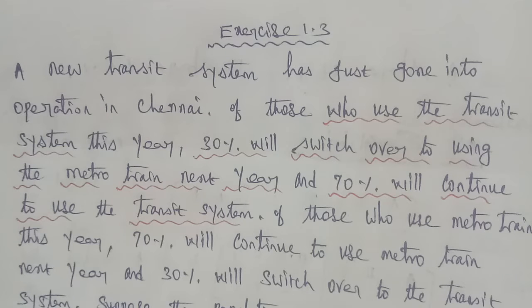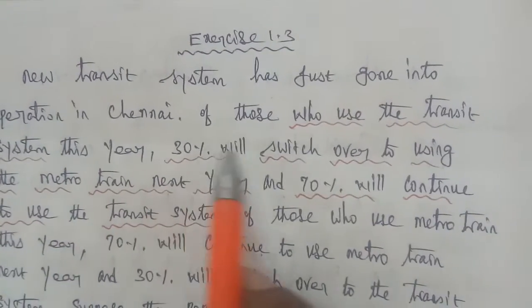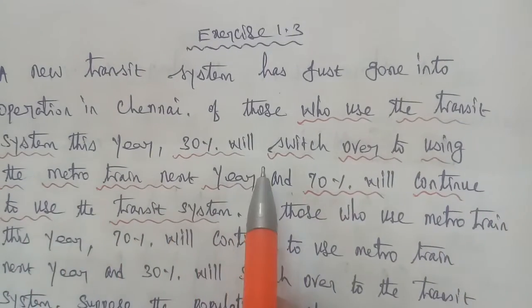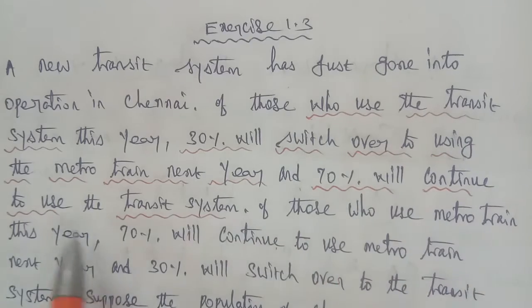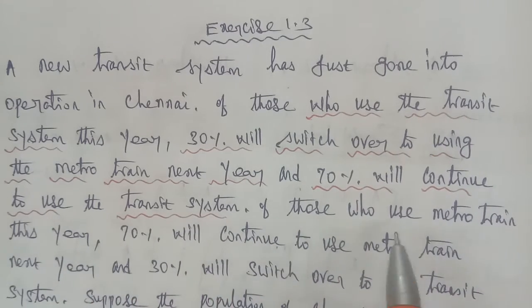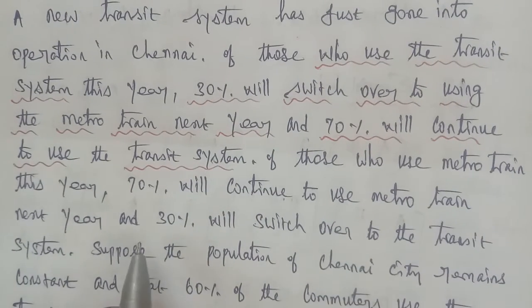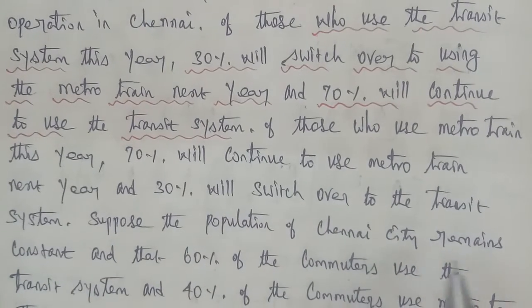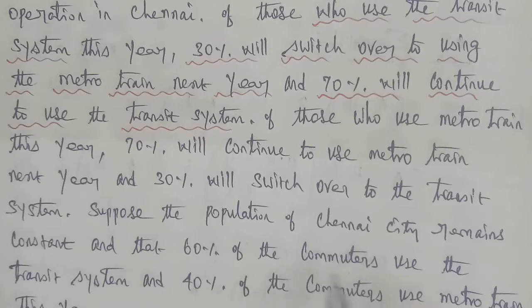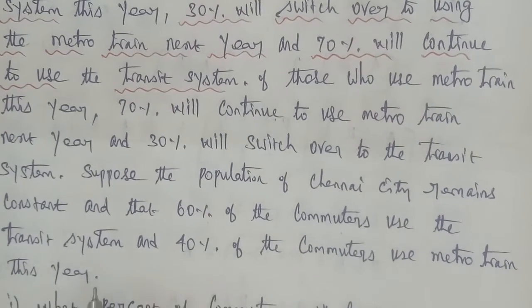Hi students. 12th business math, exercise 1.3, question number 2. A new transit system has just gone into operation in Chennai. Of those who use the transit system this year, 30% will switch over to using the metro train next year, and 70% will continue to use the transit system. Of those who use the metro train this year, 70% will continue to use the metro train next year, and 30% will switch over to the transit system. Suppose the population of Chennai city remains constant, and that 60% of the commuters use the transit system and 40% use the metro train this year.